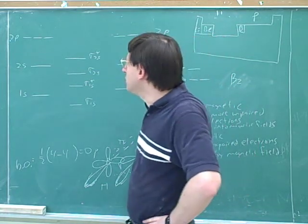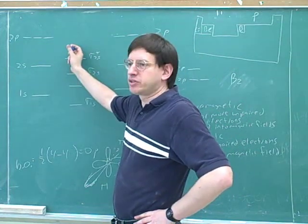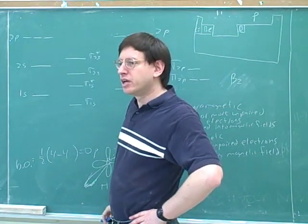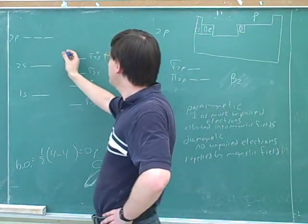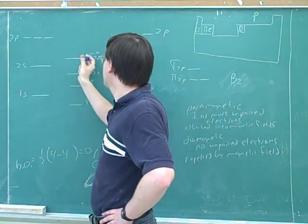All right, now it would be hard to actually predict what the levels would be here. You just have to look it up in your book. So if you look at your book, and remember we're doing here boron, what should be the next lowest level after the sigma 2s star?